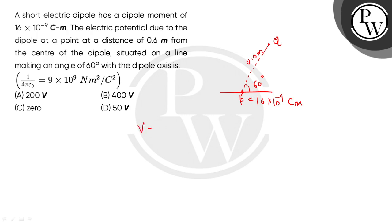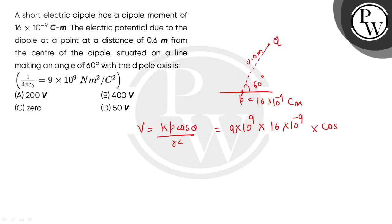What is the formula of the potential? At any point due to a dipole it is V = kp cosθ / r². This will be 9 × 10⁹ multiplied by 16 × 10⁻⁹ — this is the dipole moment value — multiplied by cos 60°, since the point is making an angle of 60 degrees with the dipole axis.